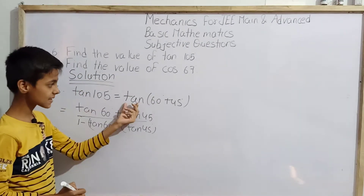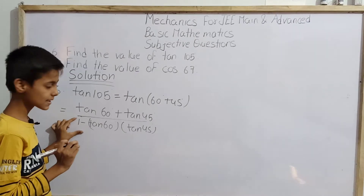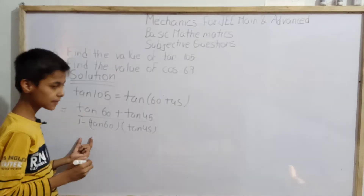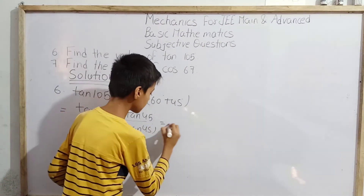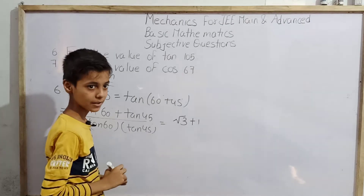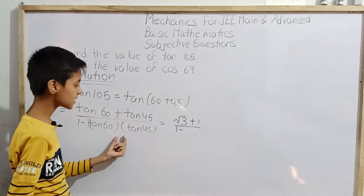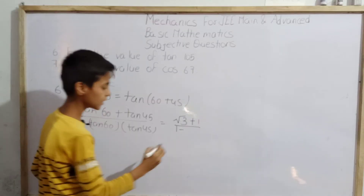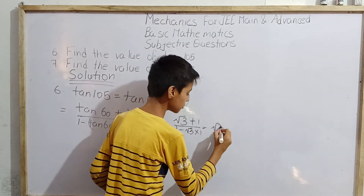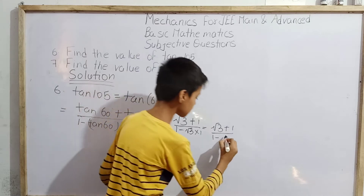So we get tan 60° plus tan 45° in the numerator, divided by 1 minus tan 60° multiplied by tan 45°. Now evaluating: tan 60° equals root 3, so numerator is root 3 plus 1, since tan 45° equals 1. The denominator is 1 minus root 3 times 1, which gives 1 minus root 3.